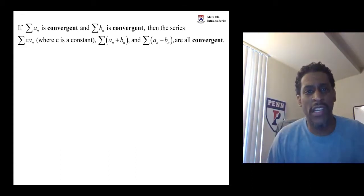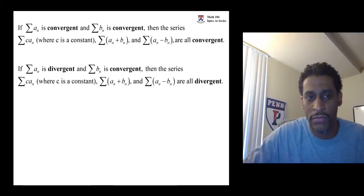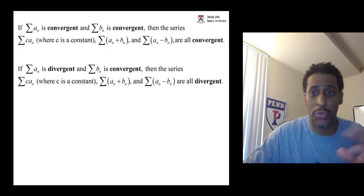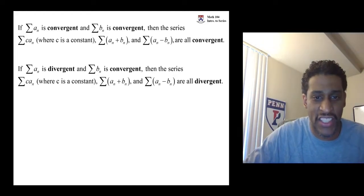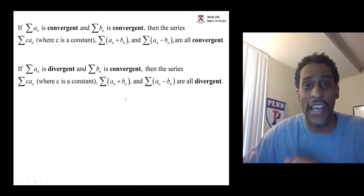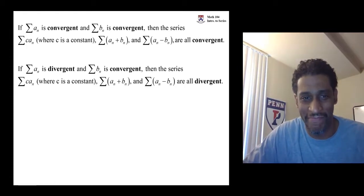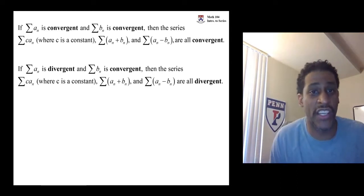Now, let's mix them. Let's take one convergent and one divergent. Add them. Subtract them. Multiply the divergent guy by a constant. Doesn't matter. Automatically, the series will be divergent. Okay. Mix one divergent in the mix. Whole thing is divergent.